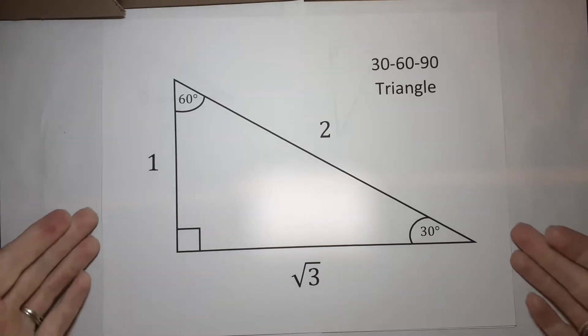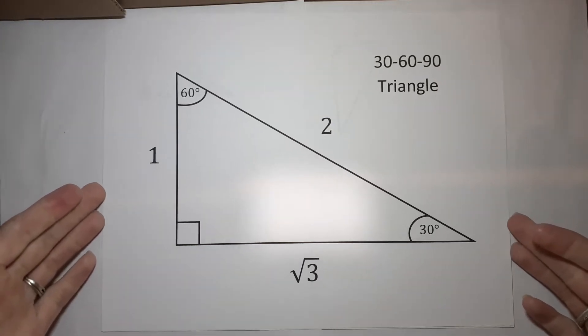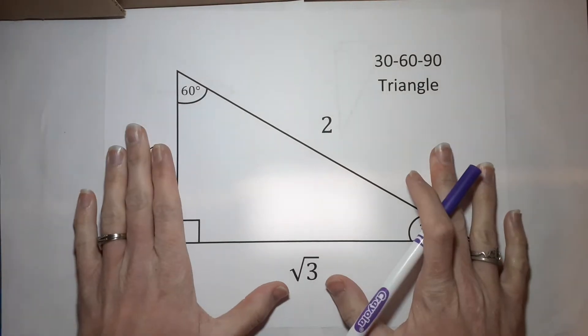Alright, we're talking about 30, 60, 90 triangles. It's a happy, happy day. Okay, this is another special triangle.